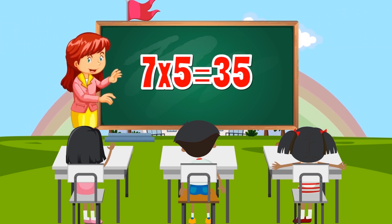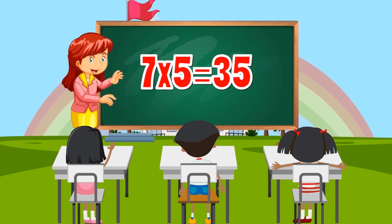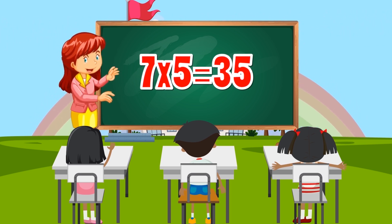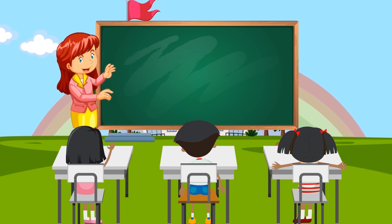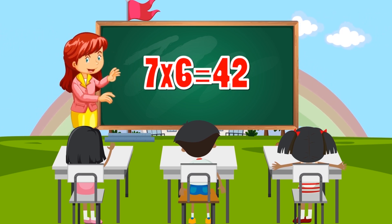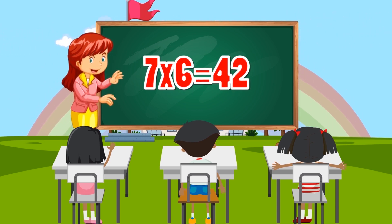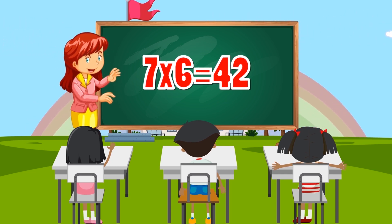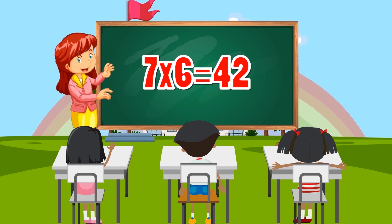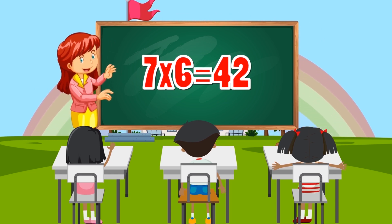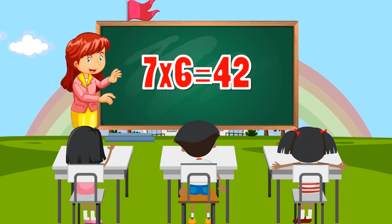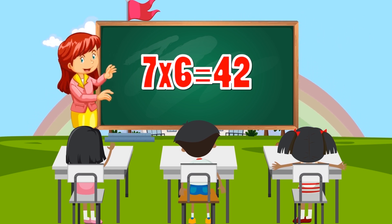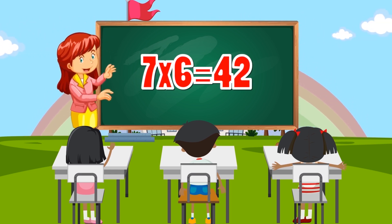7 times 5 equals 35. 7 times 6 equals 42.